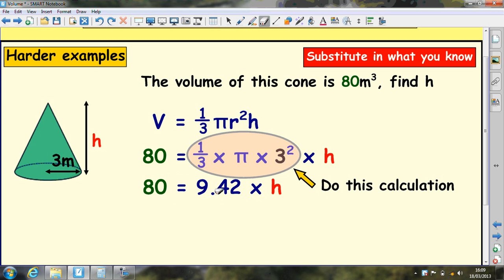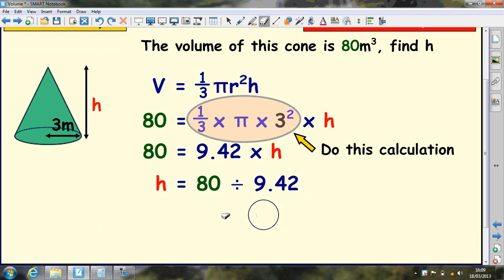So again, we're down to 9.42 times what makes 80. And you do a division. You divide by the 9.42. So 80 divided by 9.42 gives us our height of 8.49 meters.